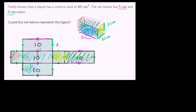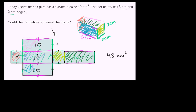These two remaining sections are 2 centimeters by 2 centimeters, so they're each going to be 4 square centimeters. So what's the total surface area? Well, 10 plus 10 plus 10 plus 10 is 40, plus 4 plus 4 gets us to 48 square centimeters. So could the net below represent the figure that has a surface area of 40 square centimeters? No - this represents a figure that has a surface area of 48 square centimeters.